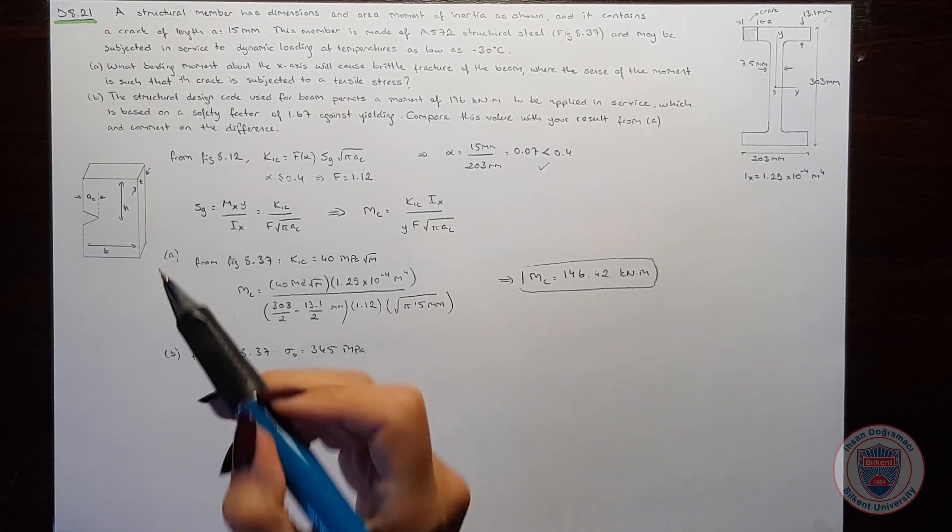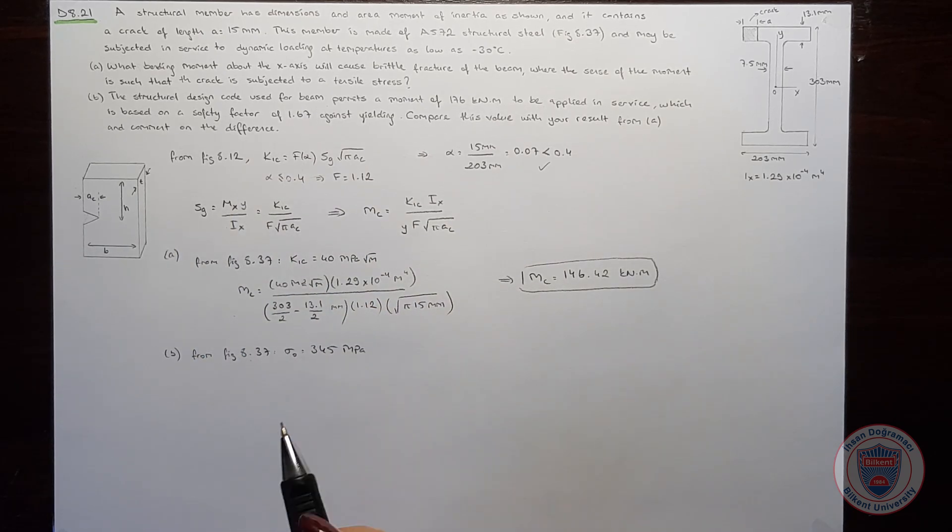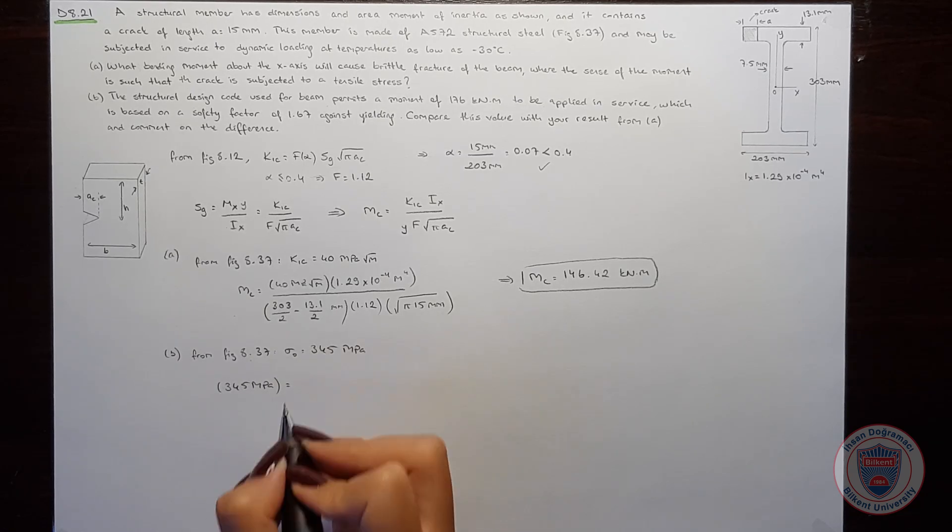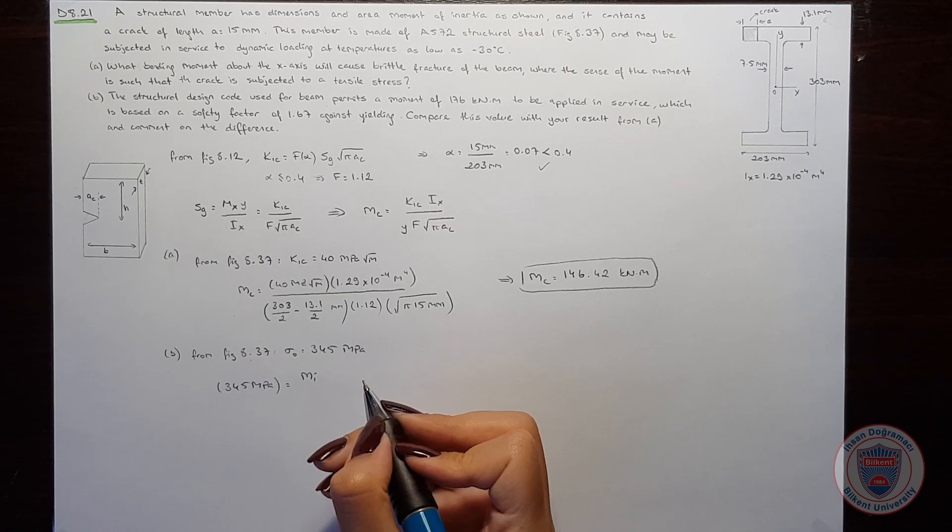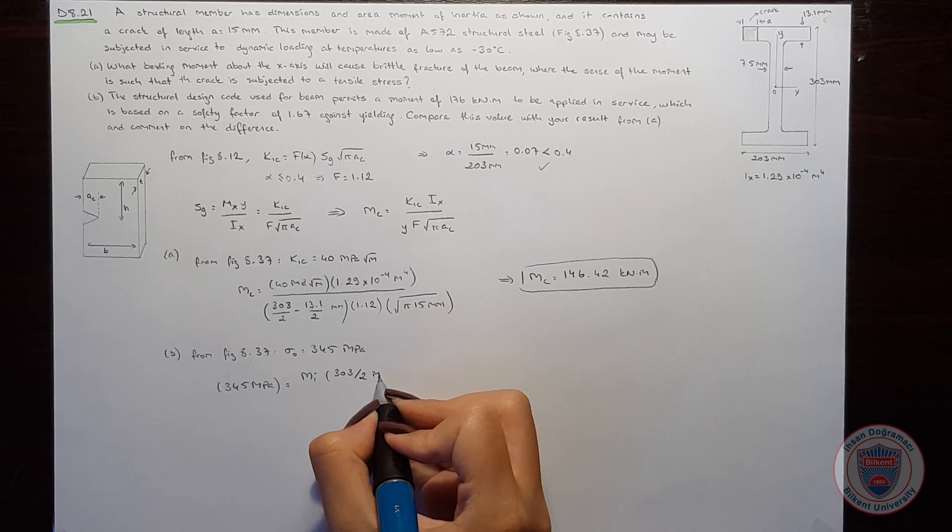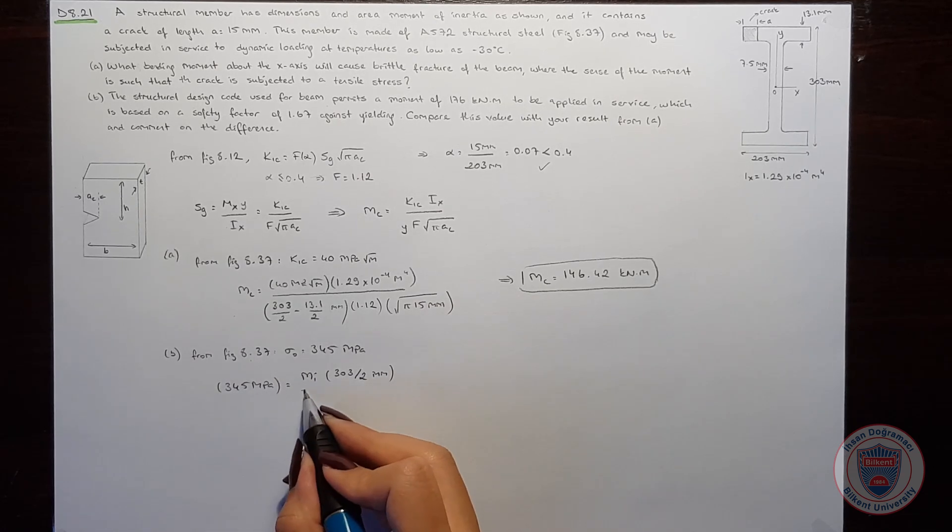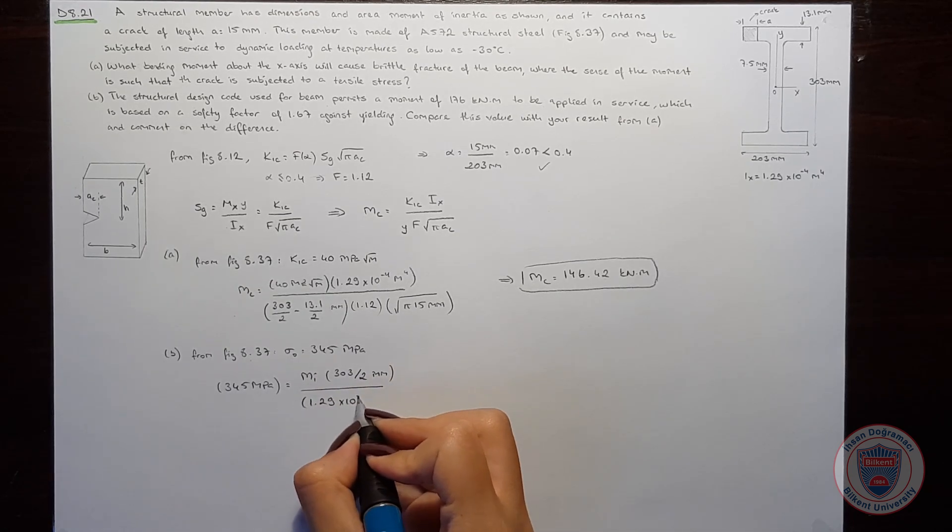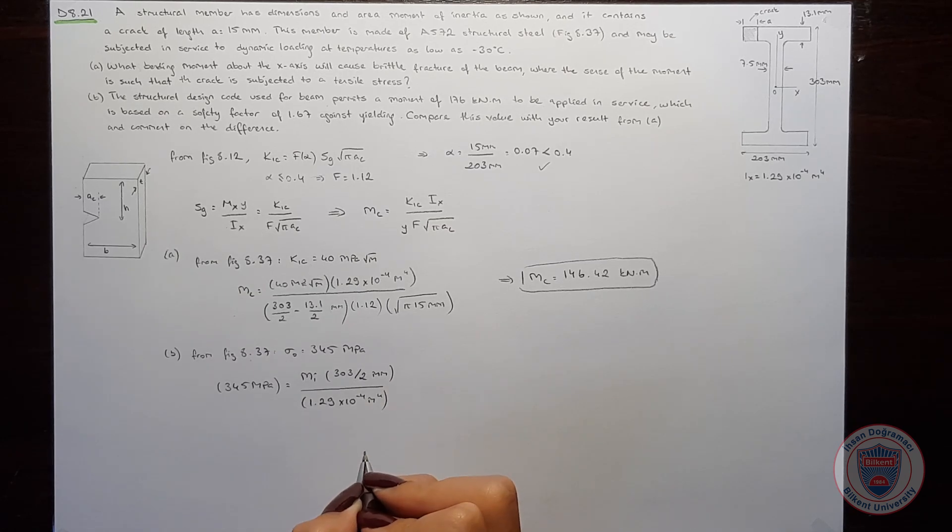And in this case, we will rearrange this equation for the yielding strength. So it will be equal to my times y over the moment of inertia. And from here, we get mI equal to 293.76 kNm.